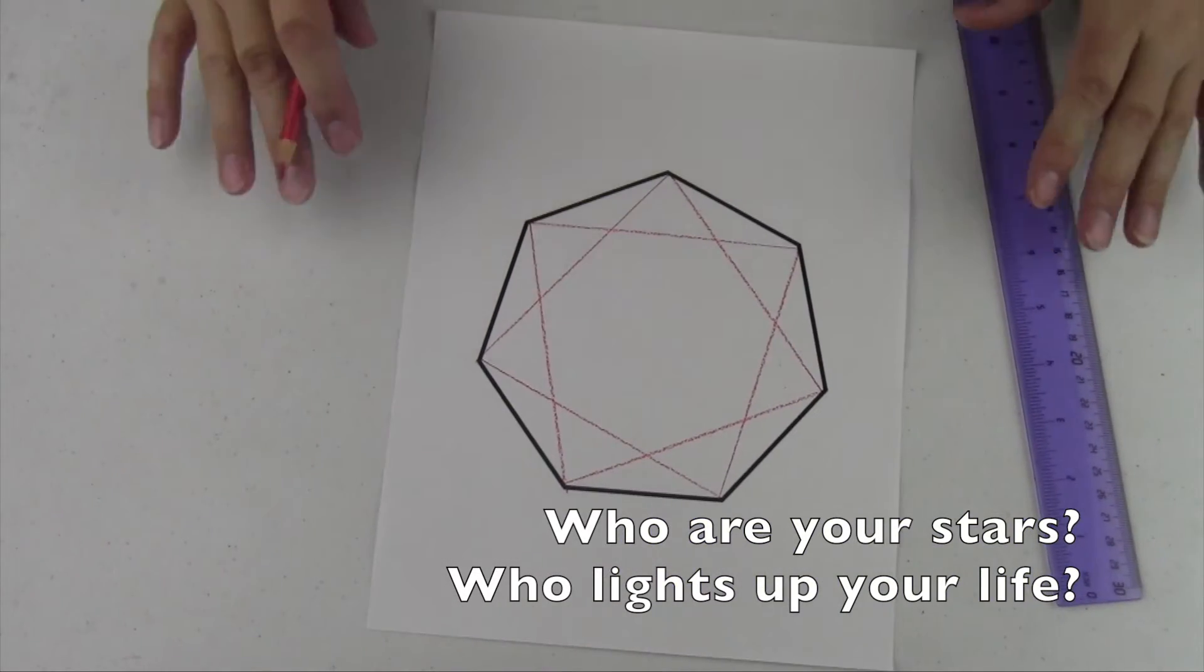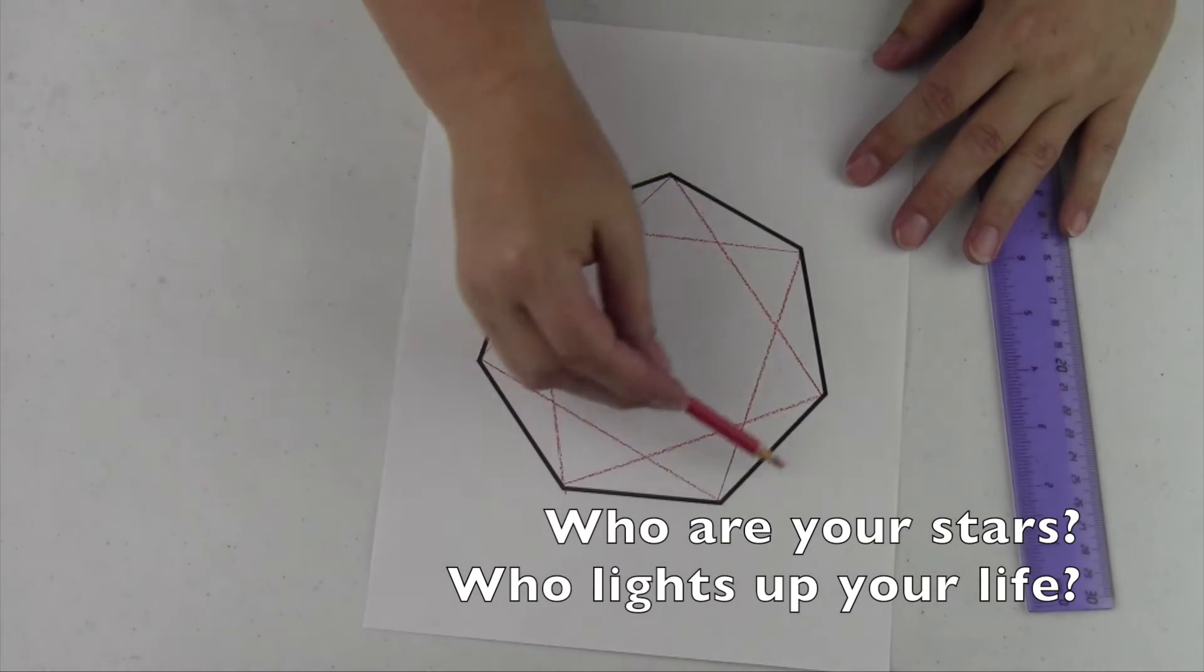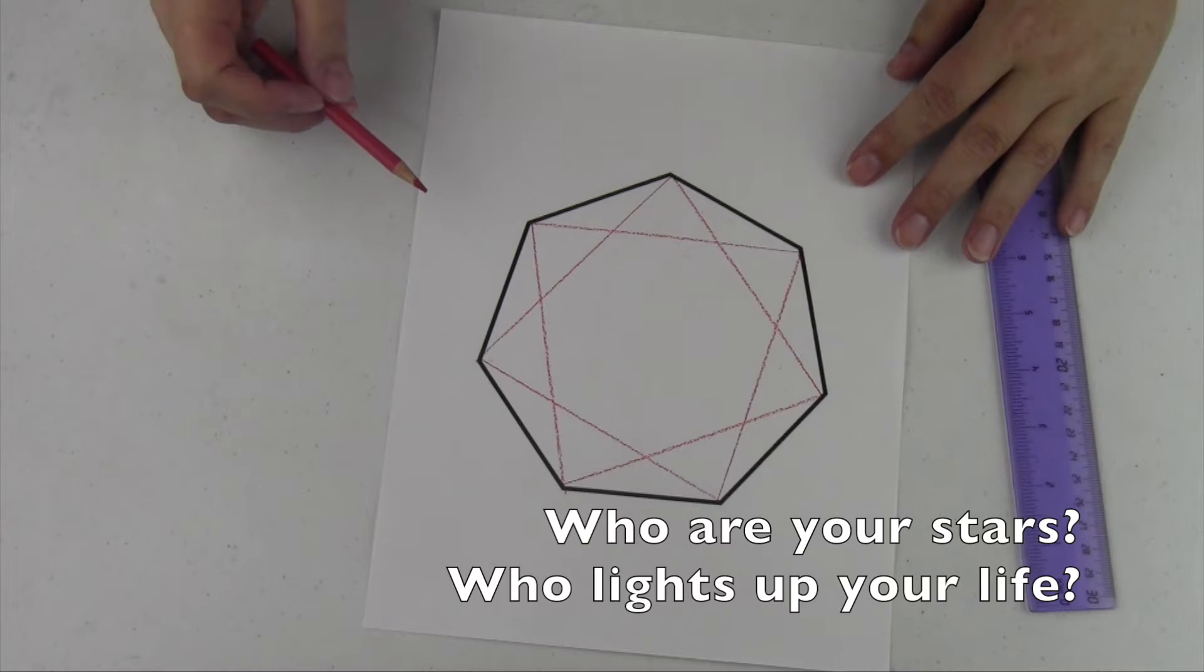And there you go. There's the very first heptagram within the heptagon. It's very beautiful. It has very nice triangles within it.